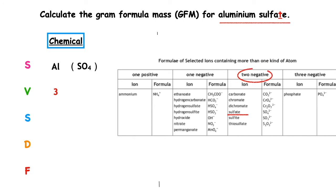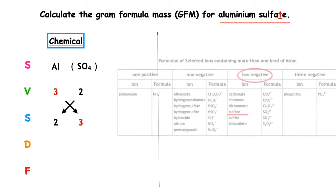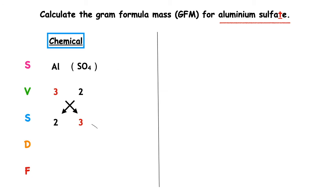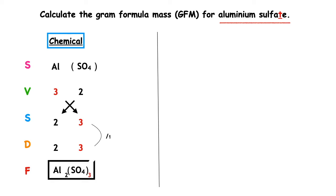The valency of sulfate is 2. We swap the valencies over. The highest number both can be divided by to keep it a whole number is 1. 2 divided by 1 is 2; 3 divided by 1 is 3. So the chemical formula is Al₂(SO₄)₃.